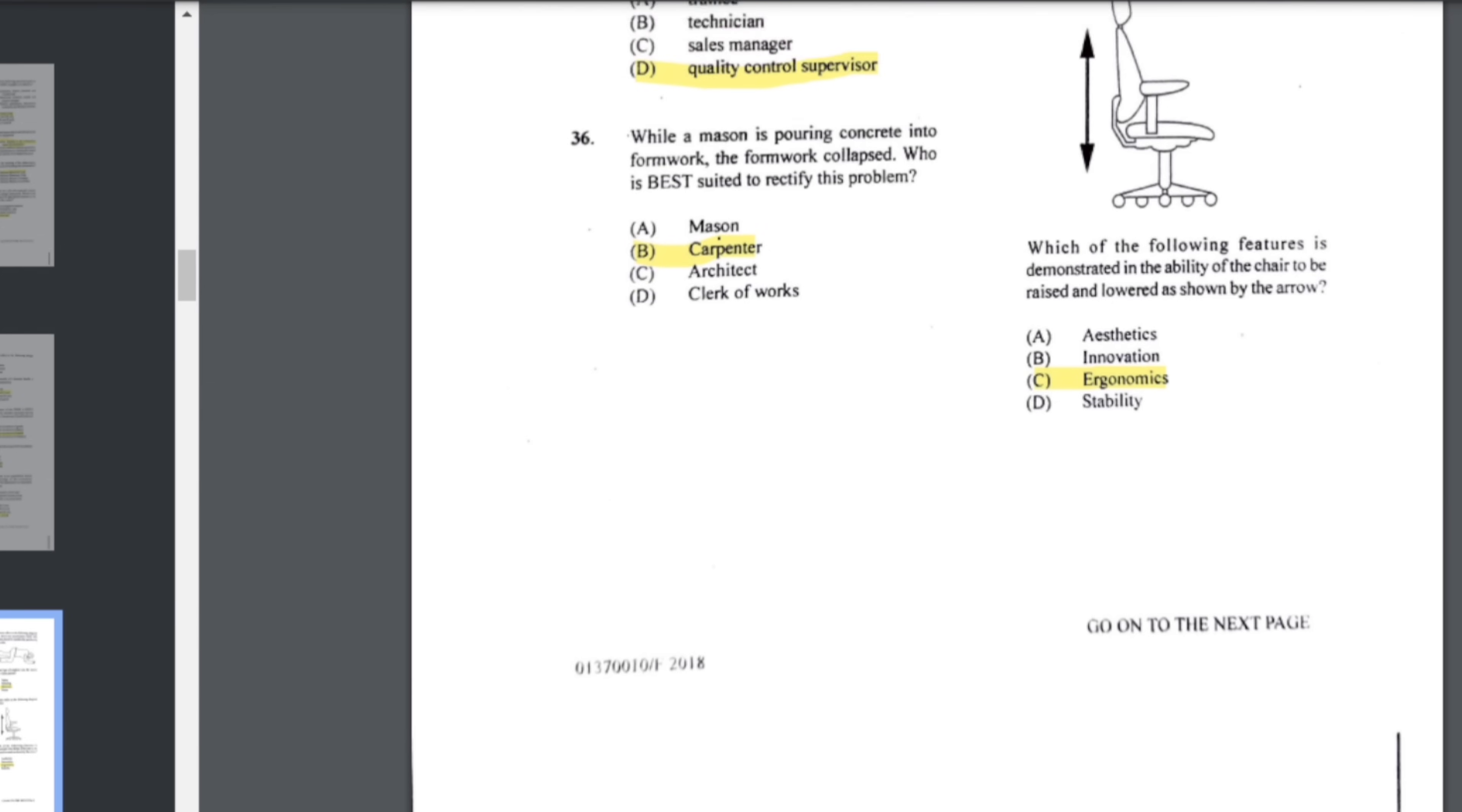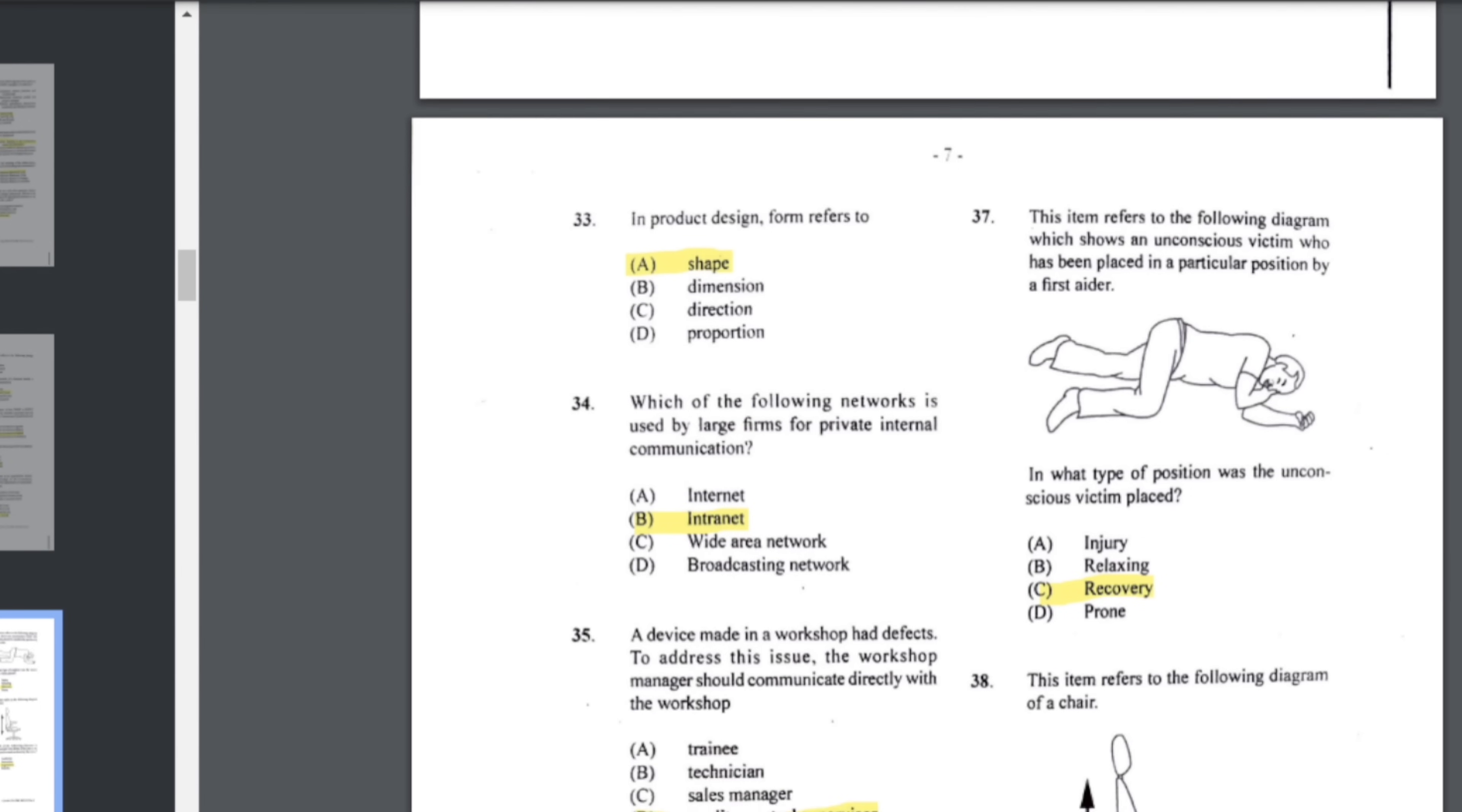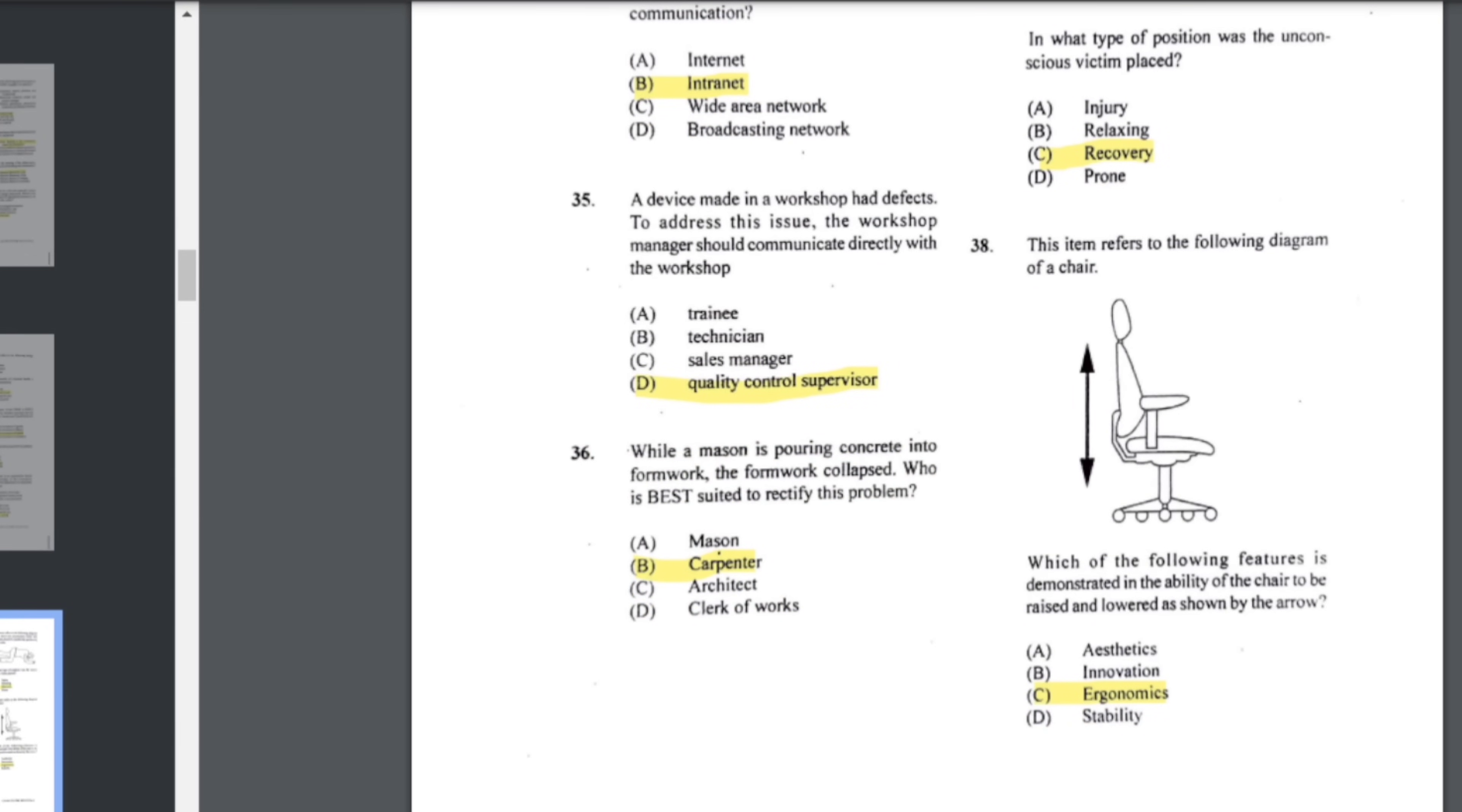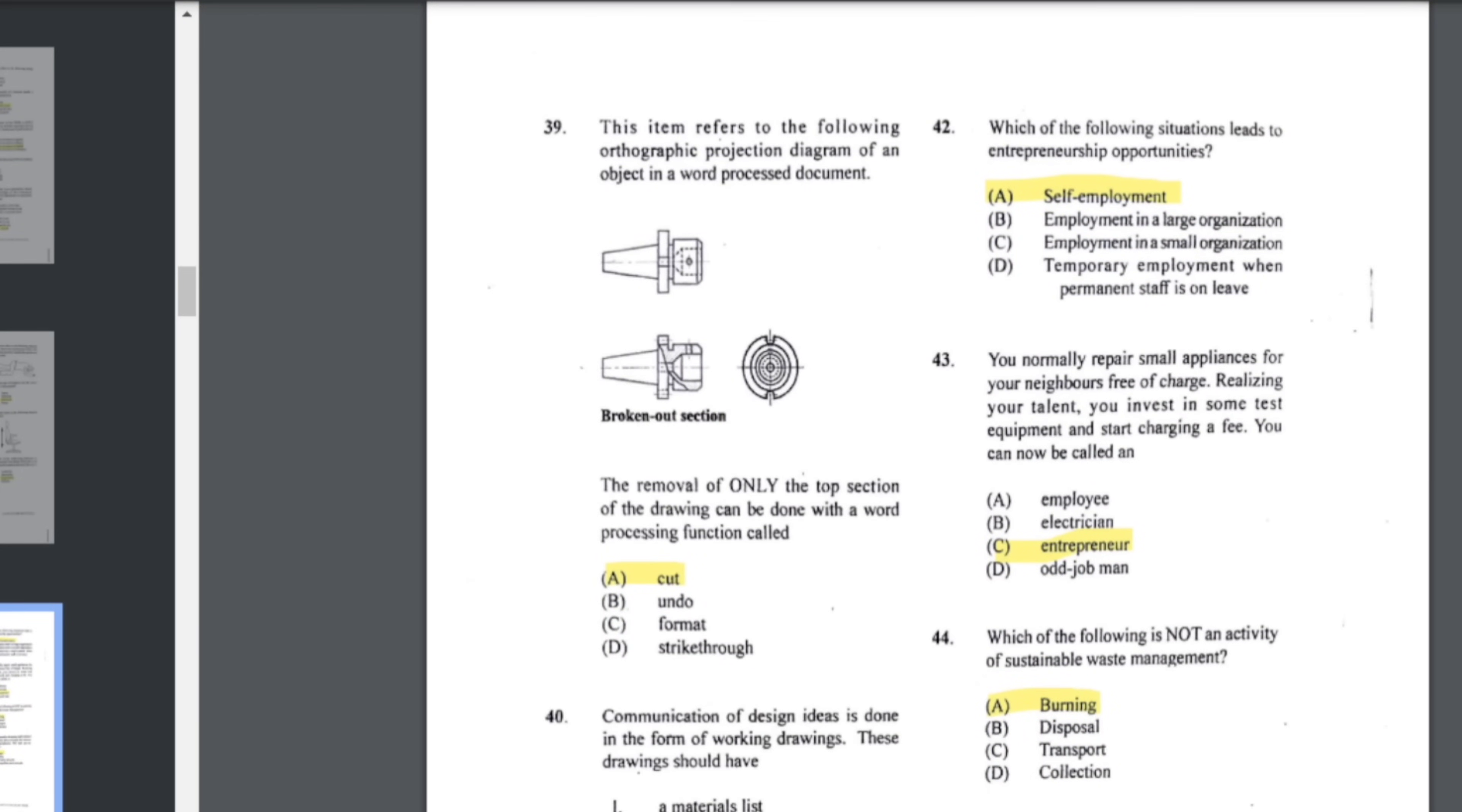Number 35: a device made in a workshop had defects. To address this issue, the workshop manager should communicate directly with the quality control supervisor. Number 36: while a mason is pouring concrete into formwork, the former collapse. Who is best suited to rectify the problem? This person would be the carpenter because the formwork is made of wood. Number 37: this item refers to the following diagram which shows an unconscious victim who has been placed in a particular position by a first aider. What is the name of this position? This is the recovery position. Number 38: which of the following features is demonstrated in the ability of the chair to be raised and lowered? That is ergonomics.